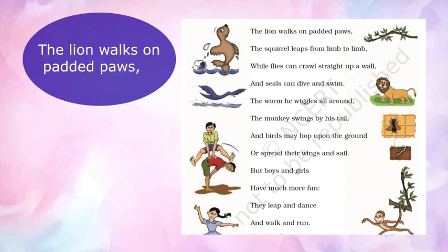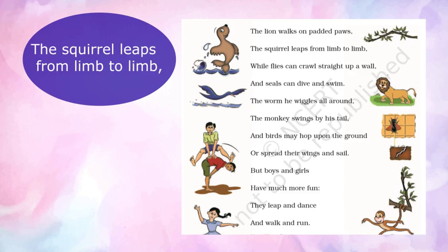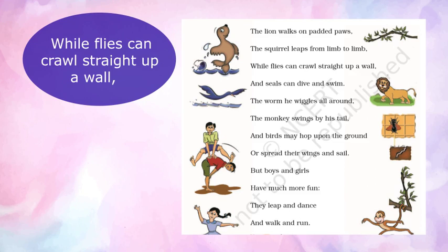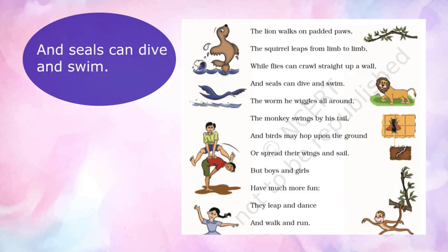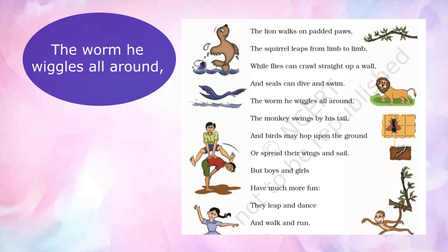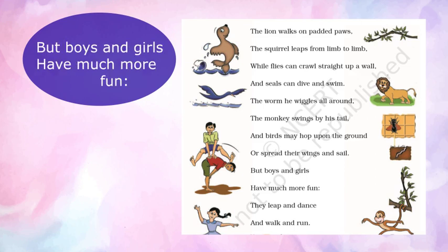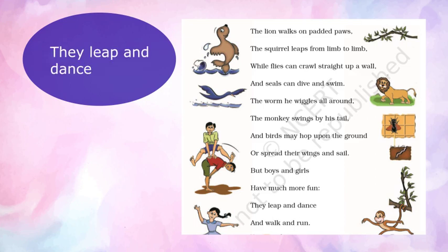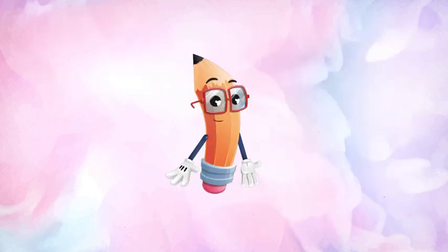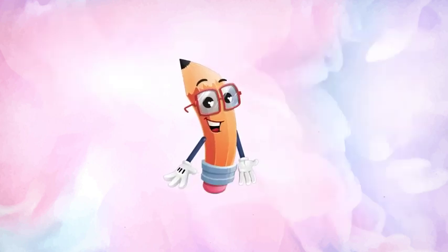Let's recite it one more time: 'The lion walks on padded paws. The squirrel leaps from limb to limb. Wild flies can crawl straight up a wall. And seals can dive and swim. The worm, he wiggles all around. The monkey swings by his tail. And birds may hop upon the ground or spread their wings and sail. But boys and girls have much more fun. They leap and dance and walk and run.'